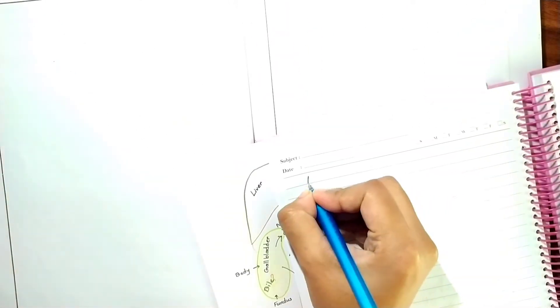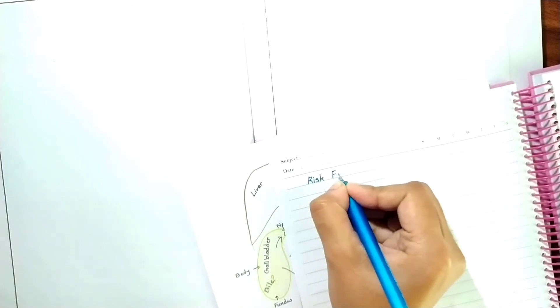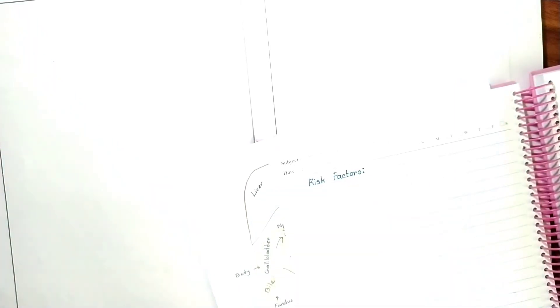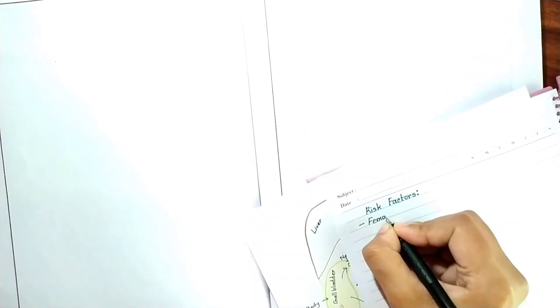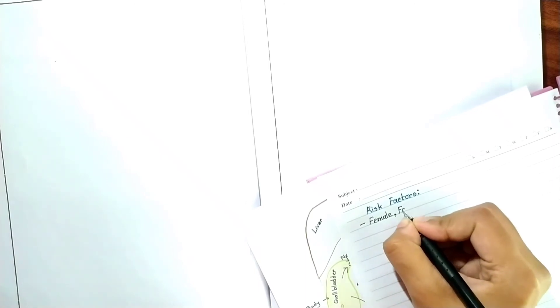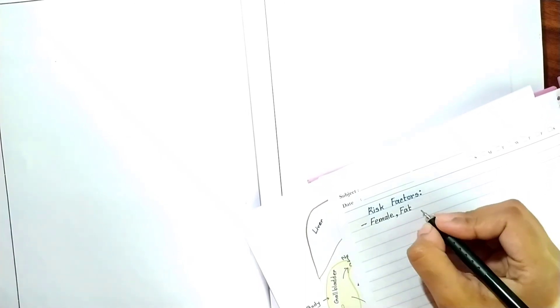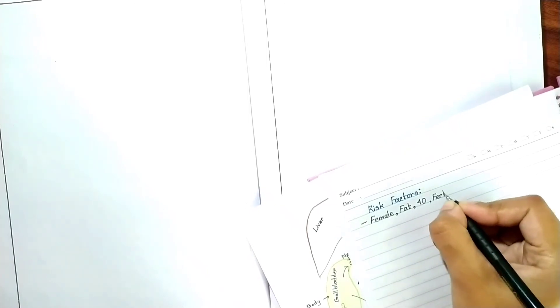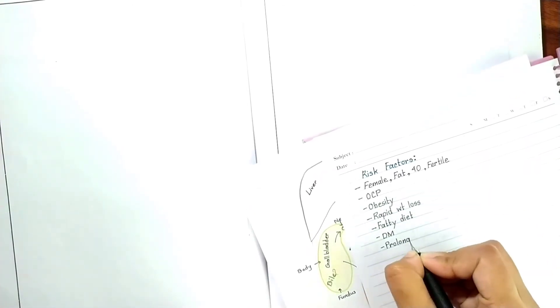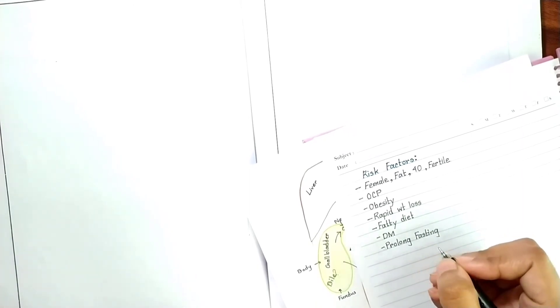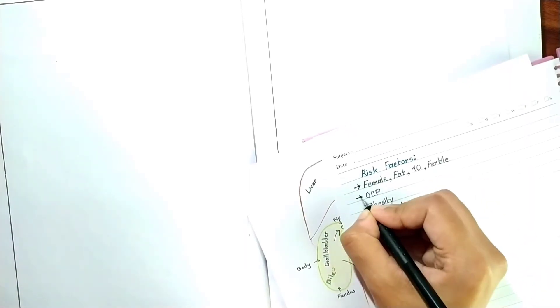Now let's talk about the risk factors of gallstone formation. The phrase 4F summarizes the major risk factors for development of gallstones: female, fat, 40, and fertile. Intake of oral contraceptive pill, obesity, rapid weight loss, fatty diet, diabetes mellitus, and prolonged fasting are the risk factors for gallstone formation.